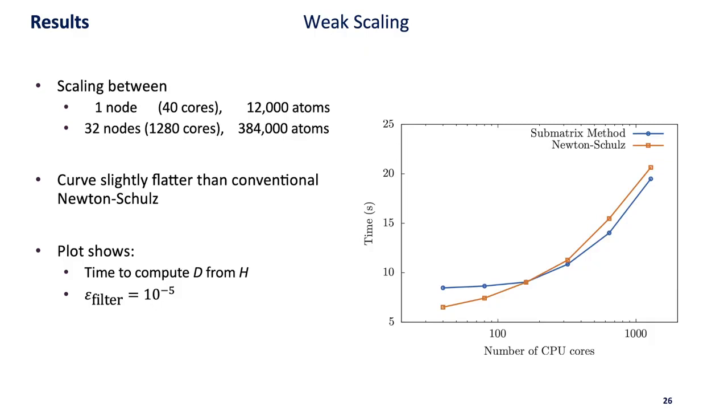We also looked at weak scaling going from 40 cores to 1280 cores while scaling the system from 12,000 atoms to 384,000 atoms. What we would like to see is basically a flat line and the submatrix method gives us a slightly flatter curve than the conventional Newton-Schulz approach.